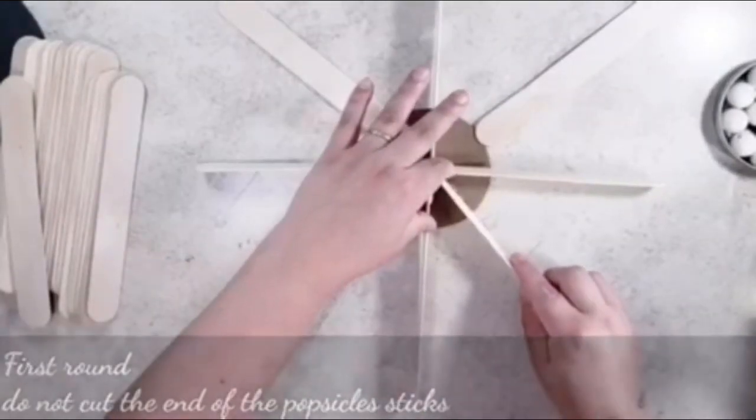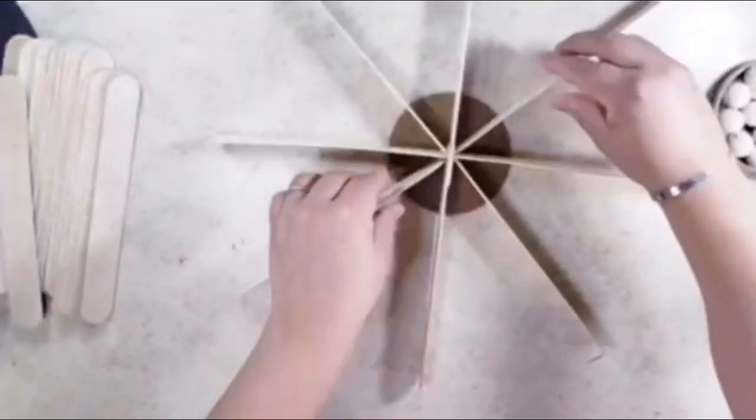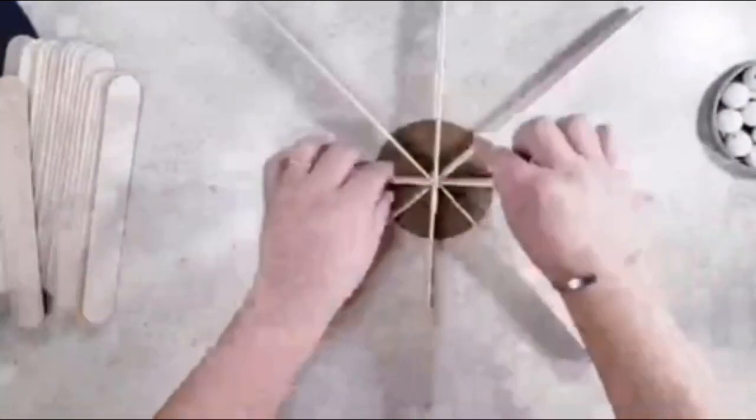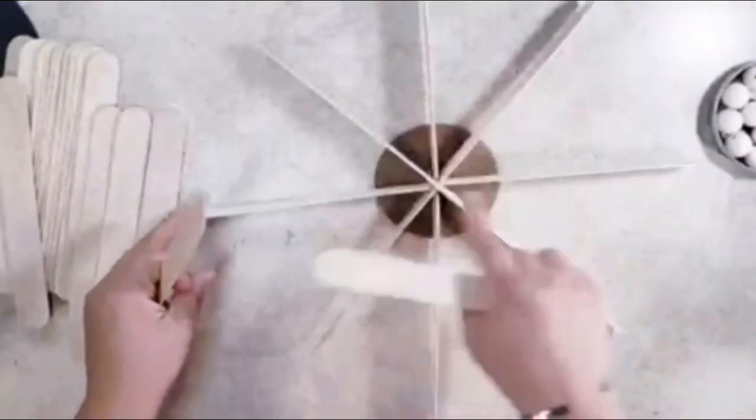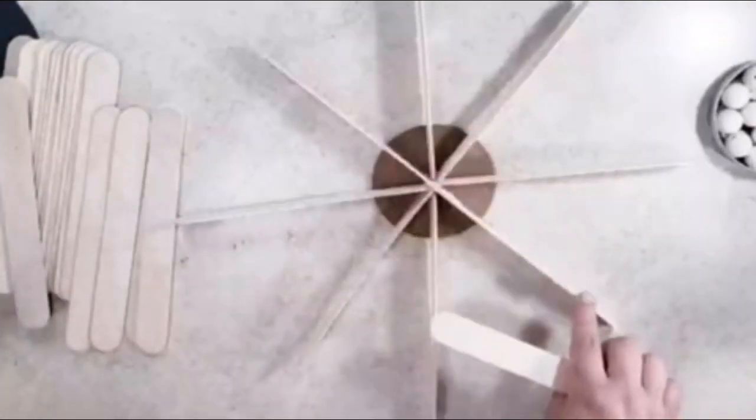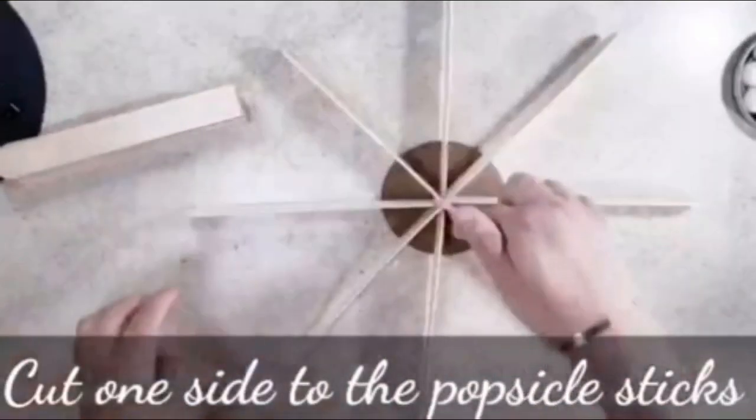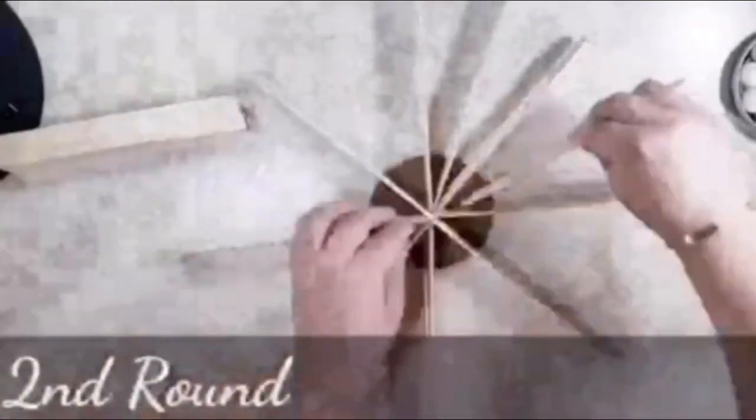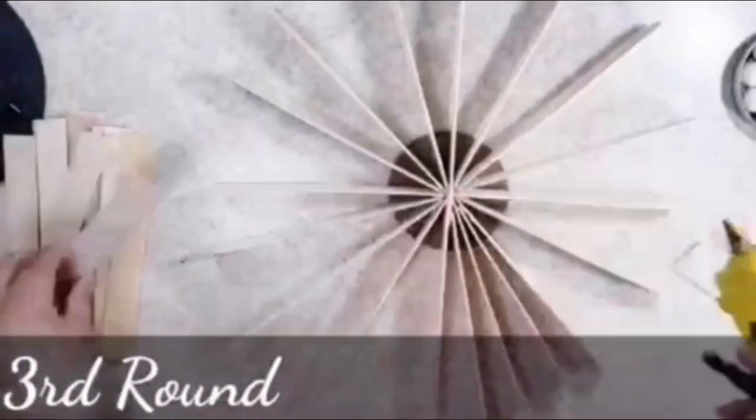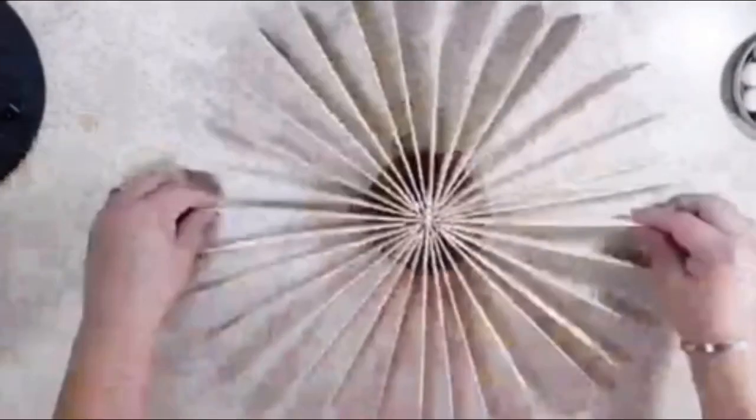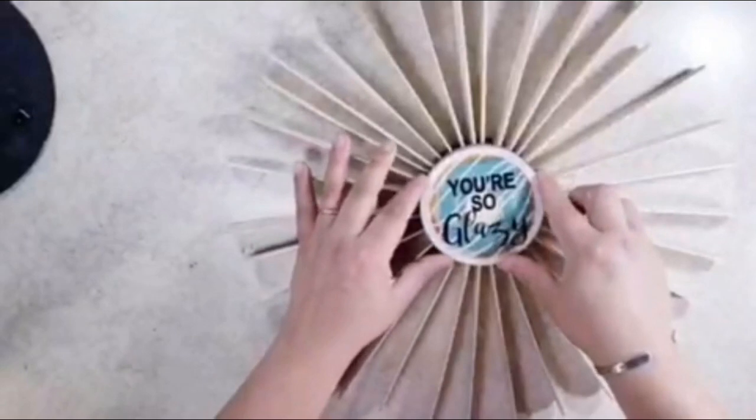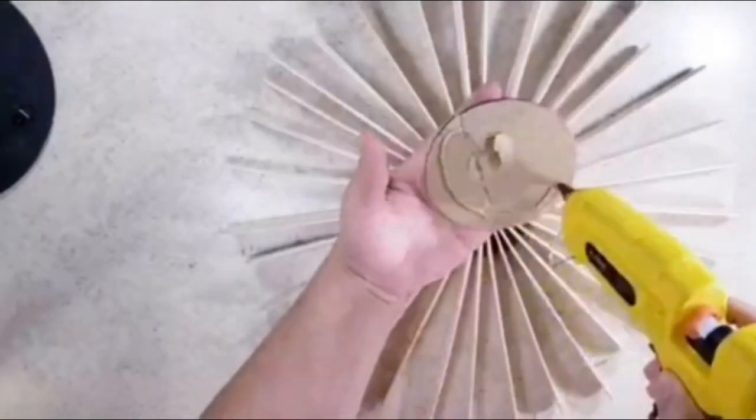Now for the rest of the popsicle sticks, I will be cutting one side off. Then I'm going to glue them to this circle. For round three I will continue gluing the rest of the popsicle sticks until most of the circle is full. Now I'm going to glue the circle part right on top of them using hot glue.